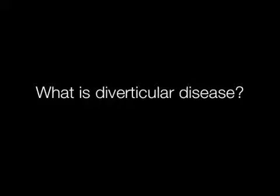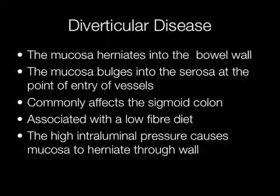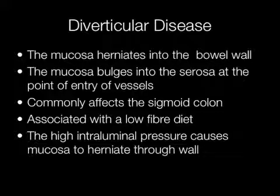What is diverticular disease? What causes it and where does it tend to occur? Diverticular disease is associated with a low fibre diet. The resulting high intraluminal pressure causes mucosa to herniate through the bowel wall. The mucosa bulges into the serosa at the point of entry of vessels, and diverticular disease commonly occurs in the sigmoid colon.